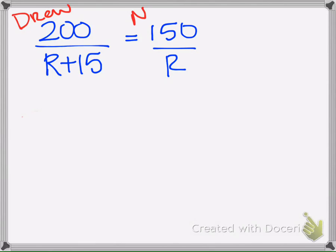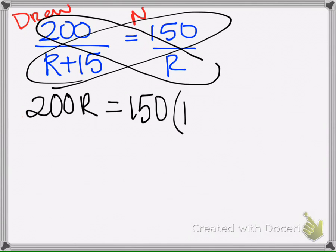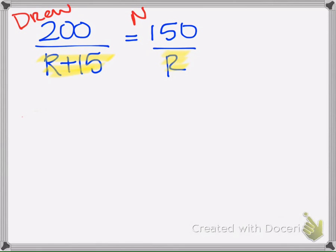Okay, now to solve this we have two options. Since we have one fraction equal to one fraction, we could use cross products like this. We could do 200R equals, and then we could do 150 times R plus 15. So if that was your thought, you're good. You can do it that way. However, this chapter focuses on finding a common denominator. So another way to do this is to look at the denominators and find a common denominator.